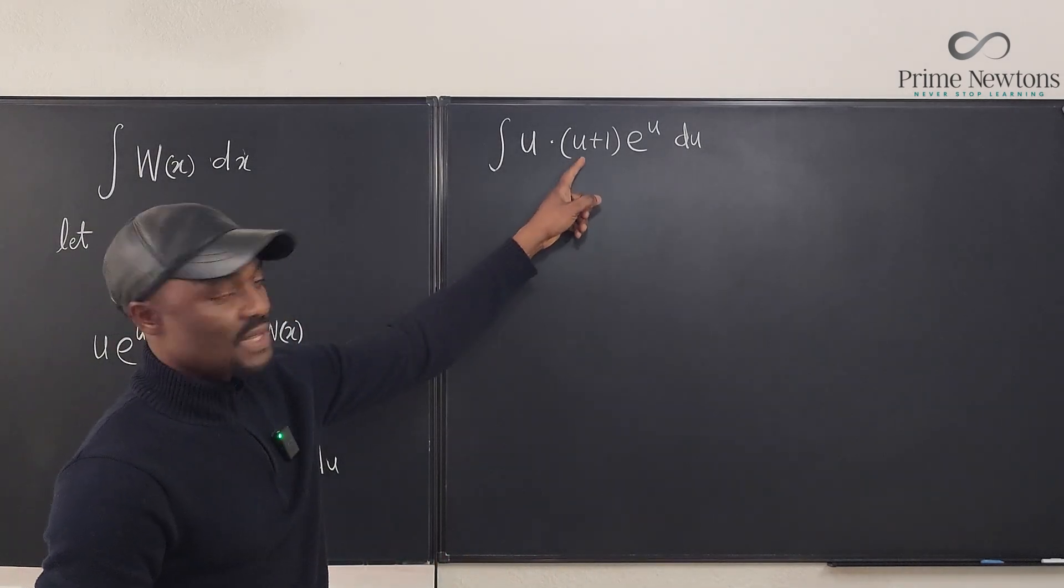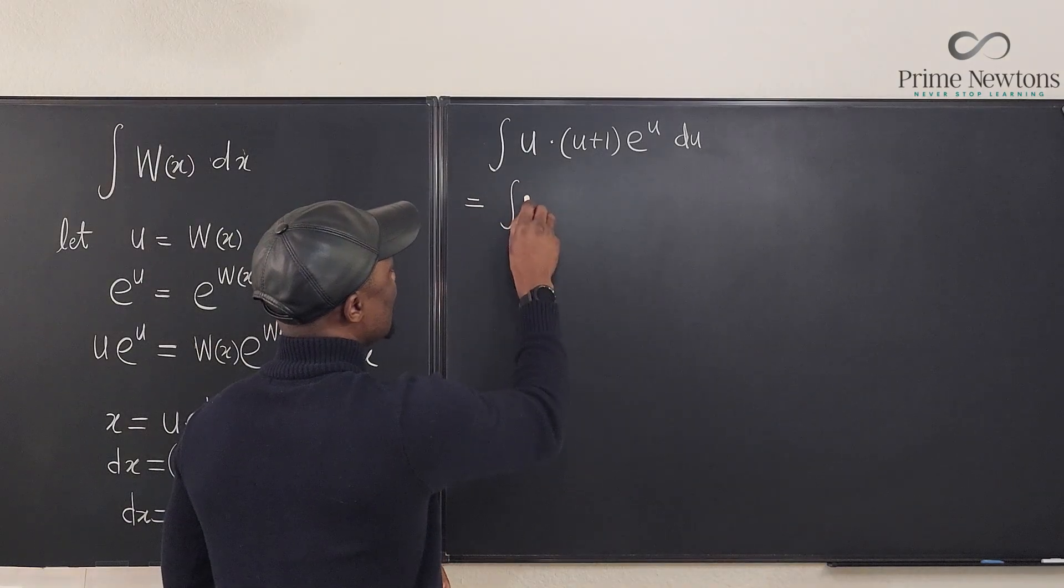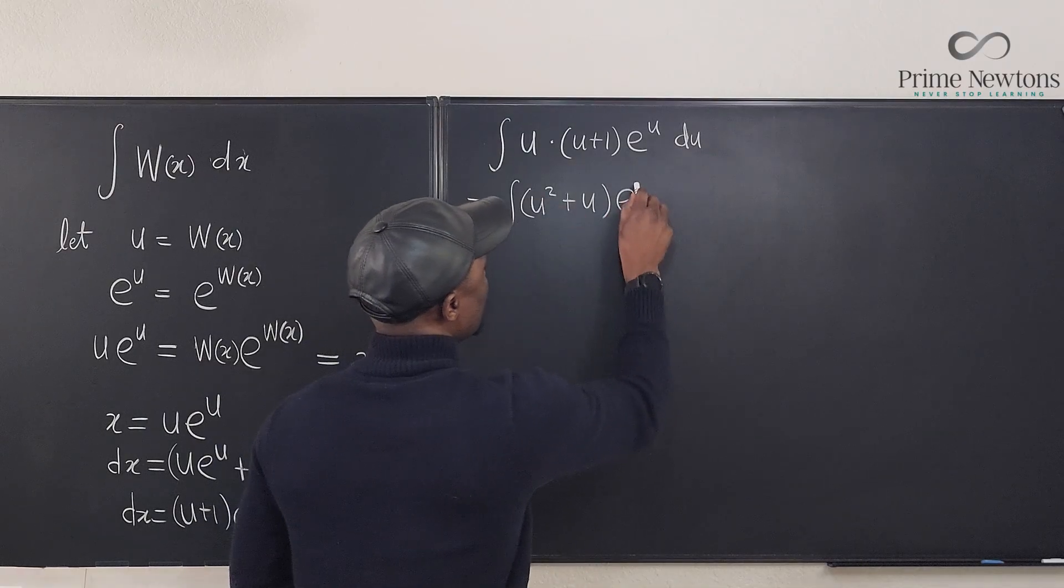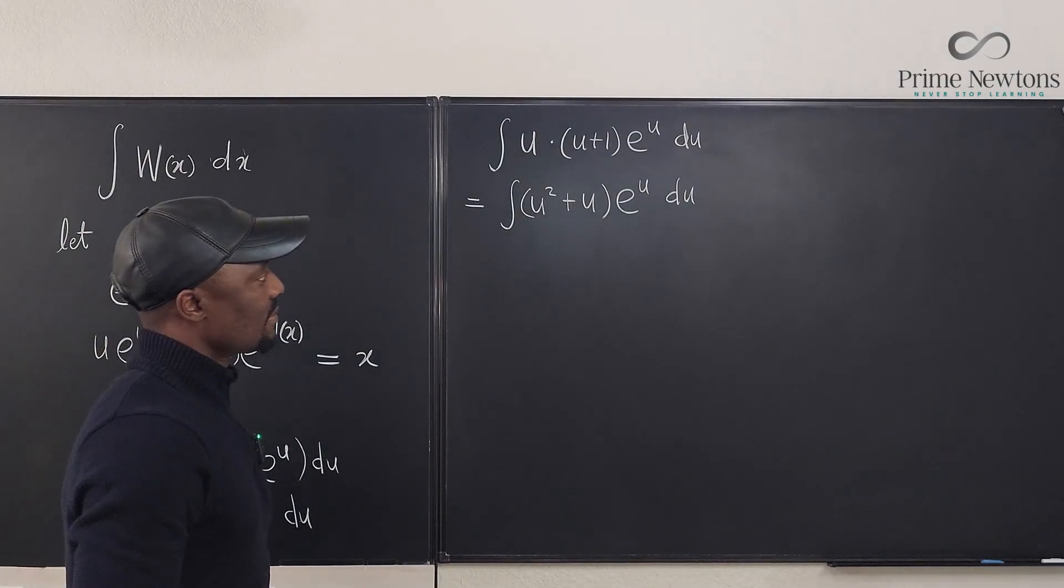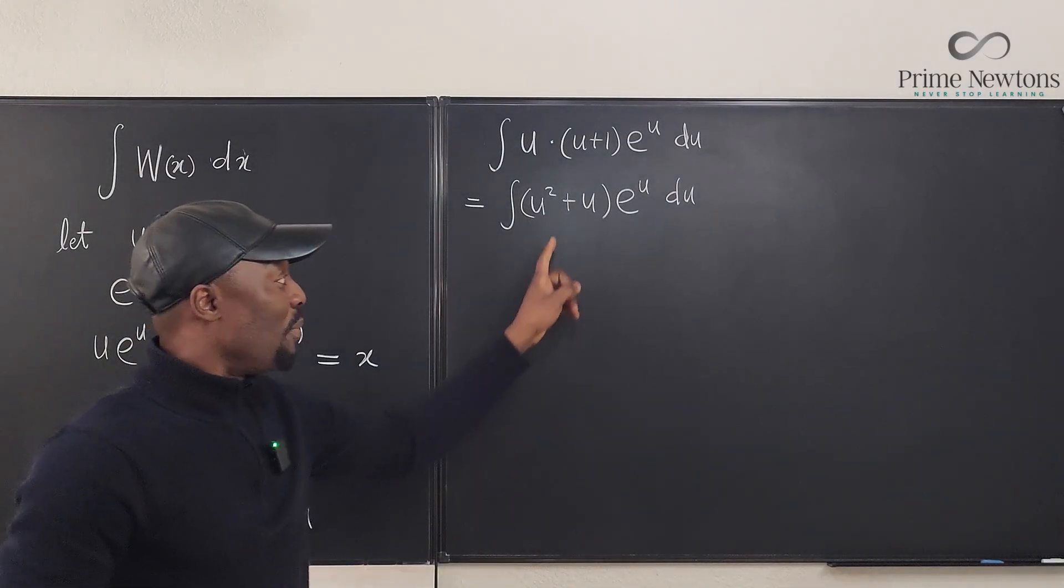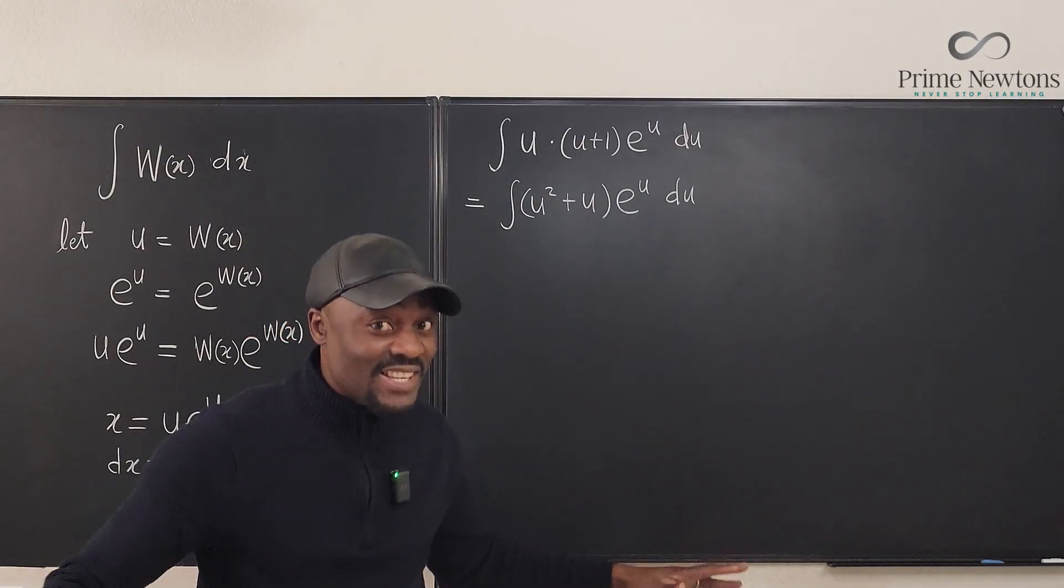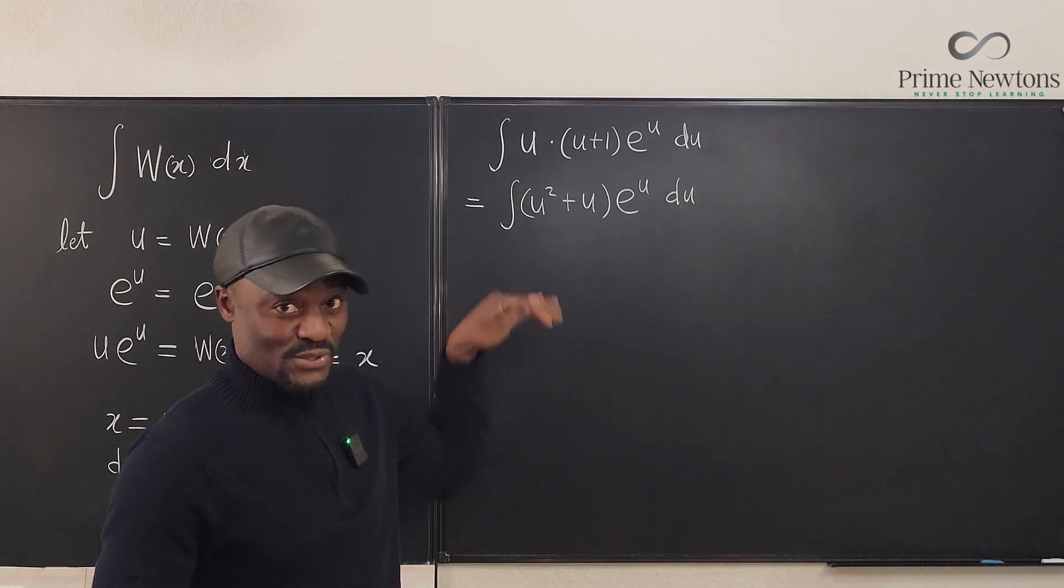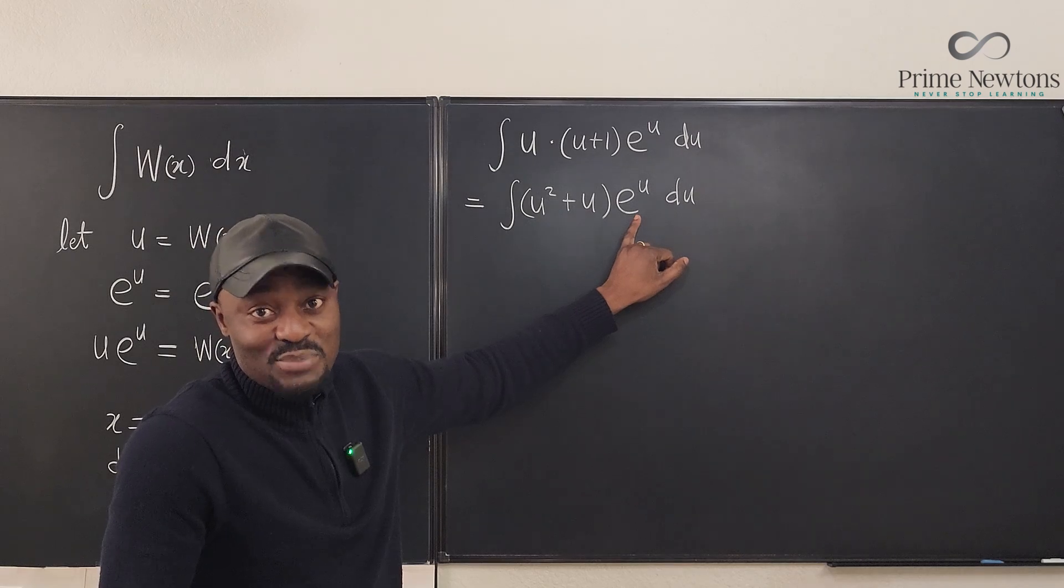I can distribute this actually so that I can have, this is the same thing as the integral of u squared plus u multiplied by e to the u du. This is a polynomial multiplying an exponential function. It is the easiest integration by parts you can ever get because the polynomial will always go to zero as you keep differentiating and this will not change. It stays the same. Beautiful.